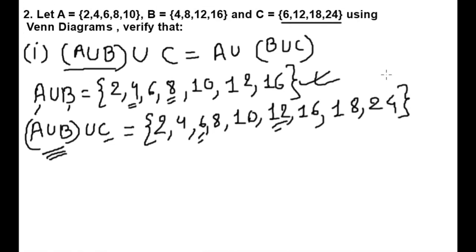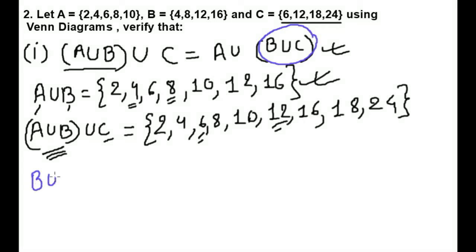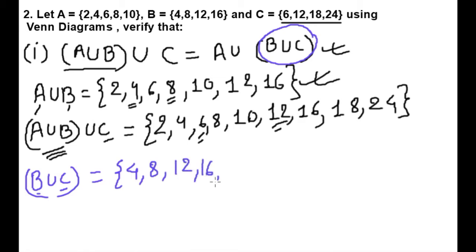Now let's prove the right hand side. For that we will first find B∪C. B∪C means we have to write all elements of B and C one time without any repetition. Elements of B are 4,8,12,16. From C: 6 is new, 12 is already there, then 18 and 24. So B∪C = {4,6,8,12,16,18,24}.